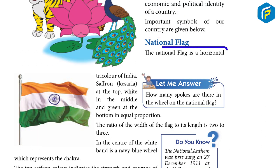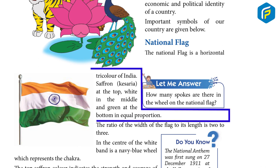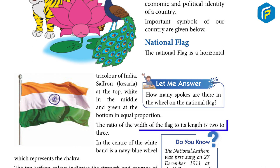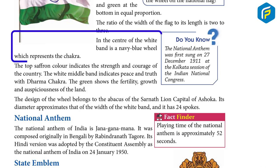National Flag: The national flag is a horizontal tricolor of India — saffron (kesaria) at the top, white in the middle, and green at the bottom in equal proportion. The ratio of the width of the flag to its length is 2 to 3. In the center of the white band is a navy blue wheel which represents the chakra.